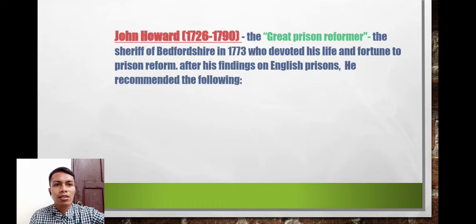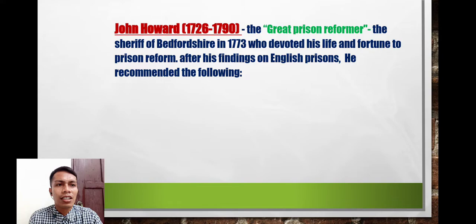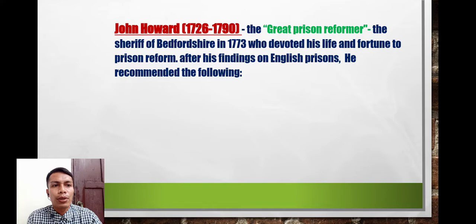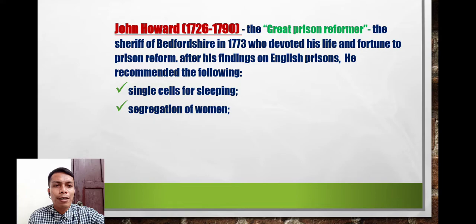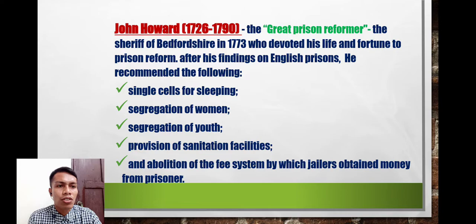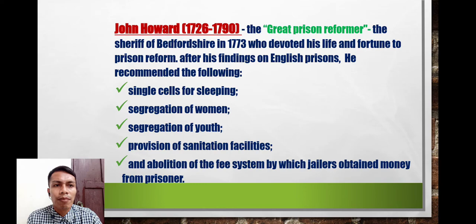John Howard, around 1726 to 1790, is known as the great prison reformer. As sheriff of Bedfordshire in 1773, he devoted his life and fortune to prison reform. His recommendations included single cells for sleeping, segregation of women, segregation of youth, provision of sanitation facilities, and the abolition of the fee system in which jailers obtained money from prisoners.